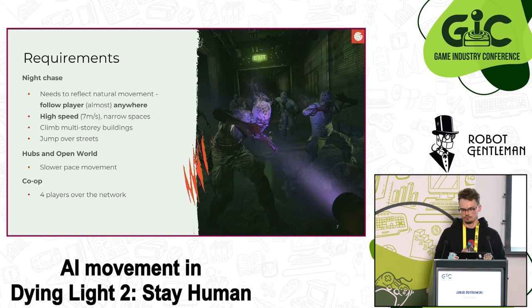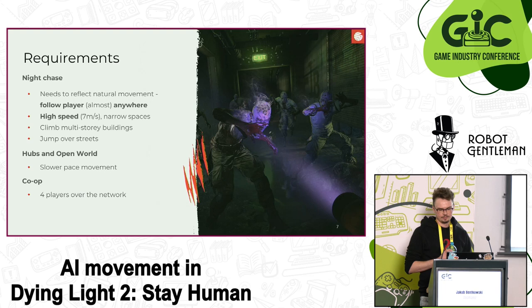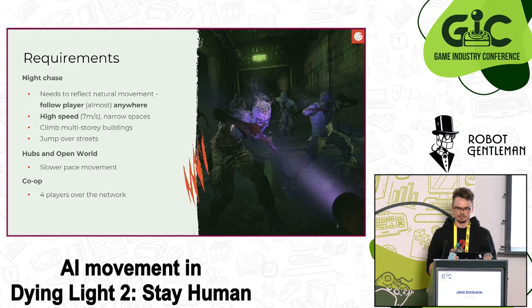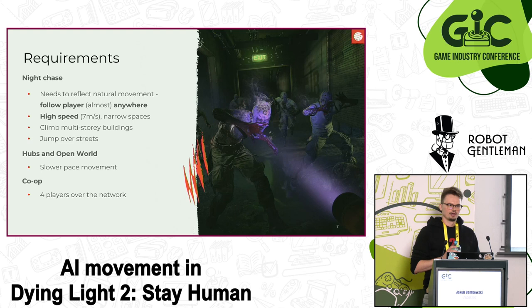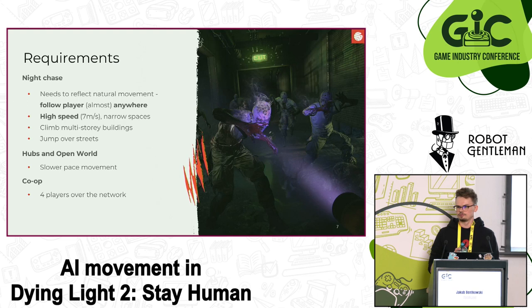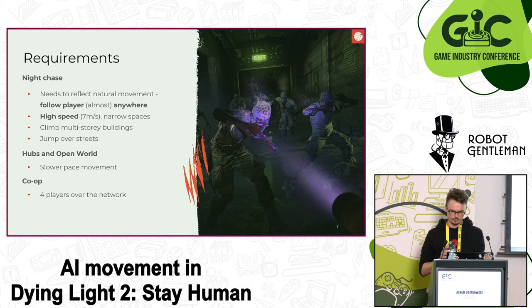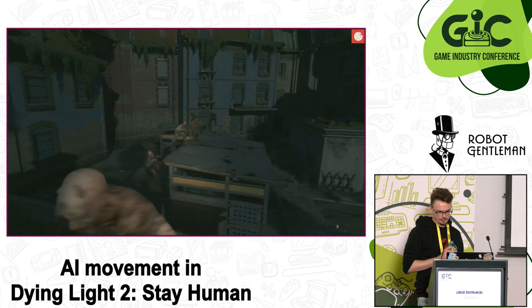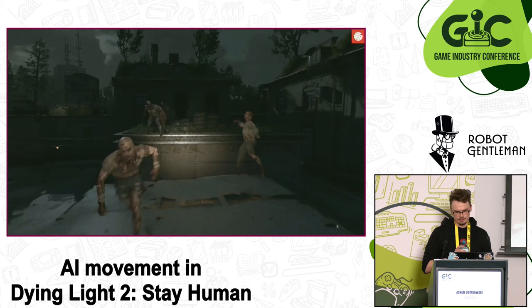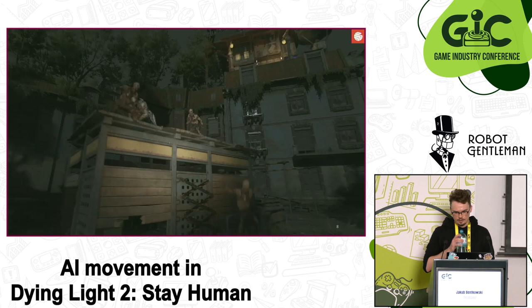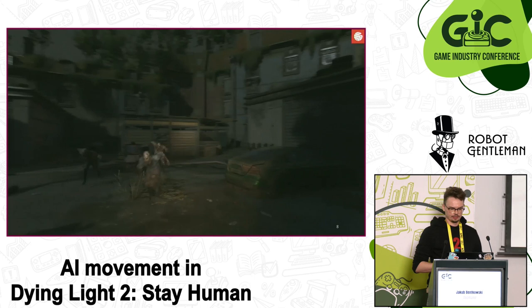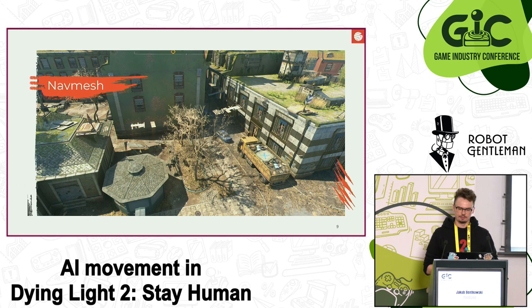What are the requirements locomotion must fit for the night chase gameplay? We needed to reflect the natural movement system which powers the player's parkour — wherever a player can go, we have to follow. It must navigate at relatively high speeds, several meters per second, making narrow turns in tight spaces, climb multi-story buildings, and jump over streets to reach buildings on the other side. Locomotion must also support slower-paced movement for human AIs in the open world and hubs, and slower zombies like biters — and it must work in four-player co-op over the network.